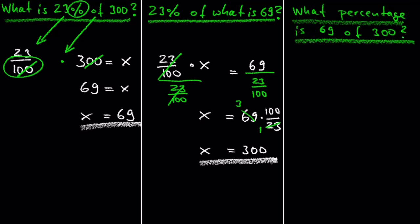So let's put the x in the spot of the unknown number. x times 300 equals 69. Again, we just have to isolate the x by dividing the equation by 300 on both sides.